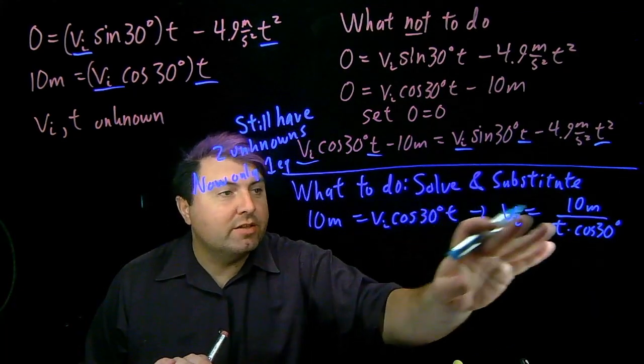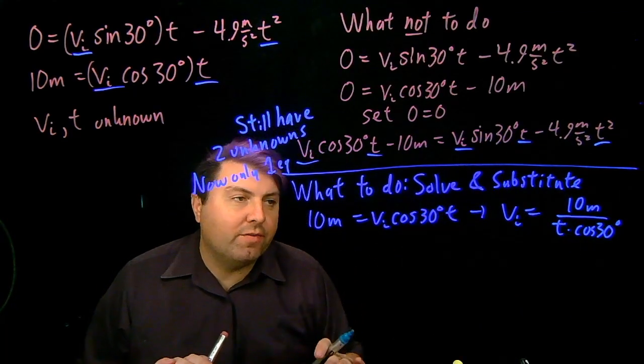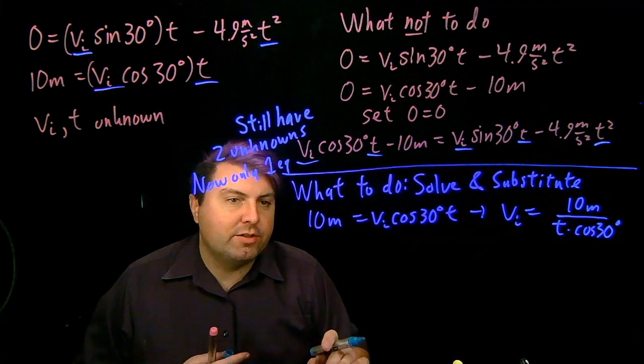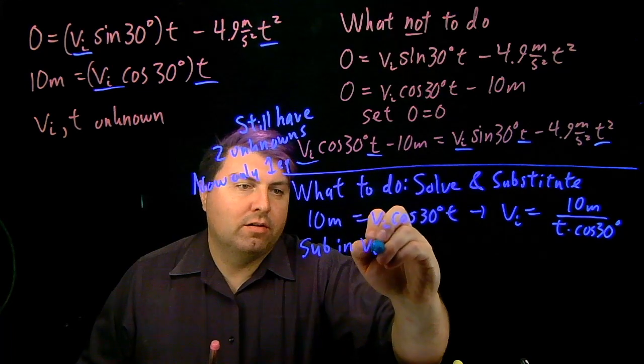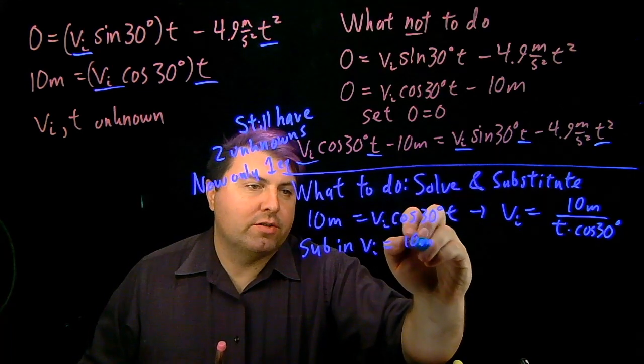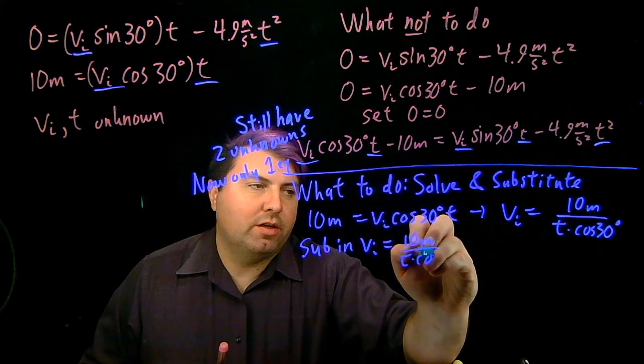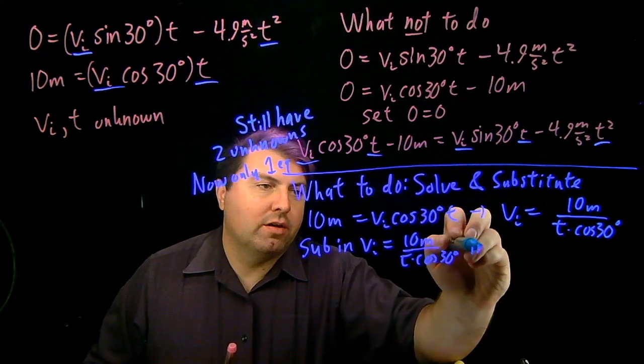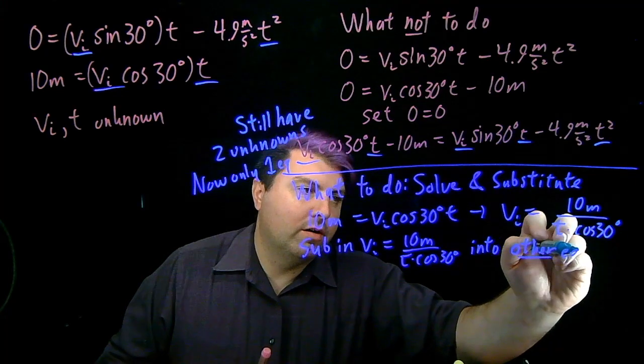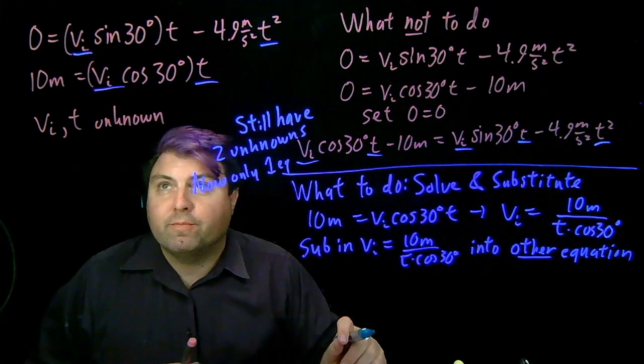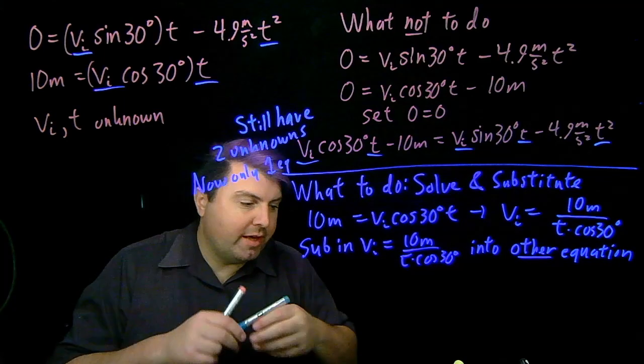I still haven't really solved for anything truly, but then what I do is that I then substitute vi = 10m / (t cos 30°) into the other equation.